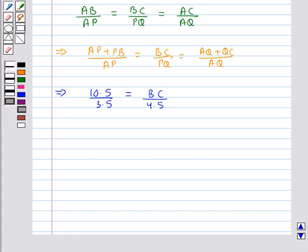Now since we need to find the length of BC we can ignore this part and consider these two. So from here we get BC is equal to 10.5 into 4.5 upon 3.5.